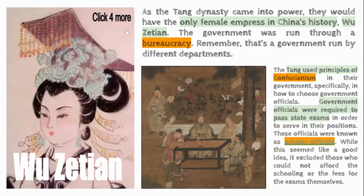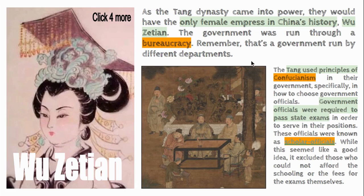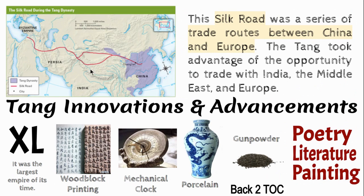In the Tang dynasty, the only female empress we see is Wu Zetian. Their government was run by a bureaucracy — government run by different departments. The Tang used principles of Confucianism, and government officials were required to take state exams; these officials were called scholar officials. The problem was not everybody had the money to get schooling or take the test, which eliminated people from having that ability.